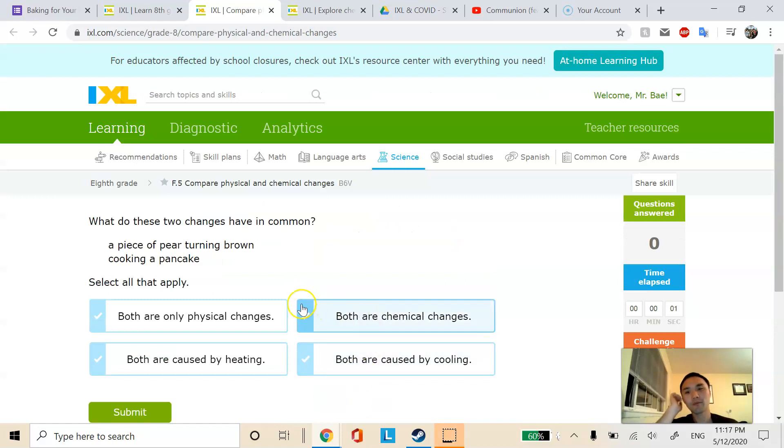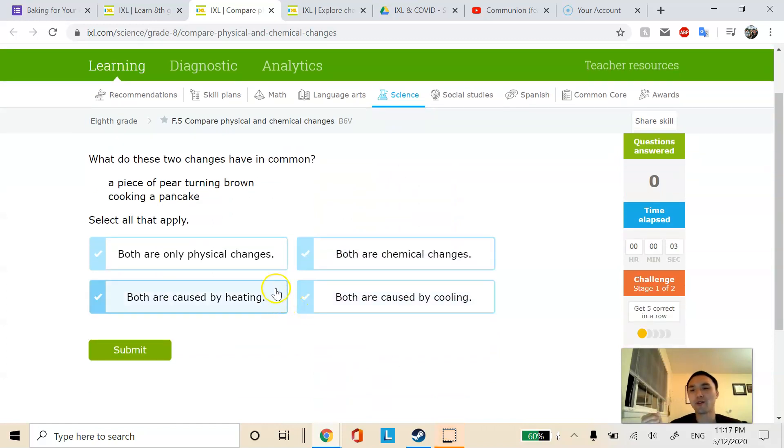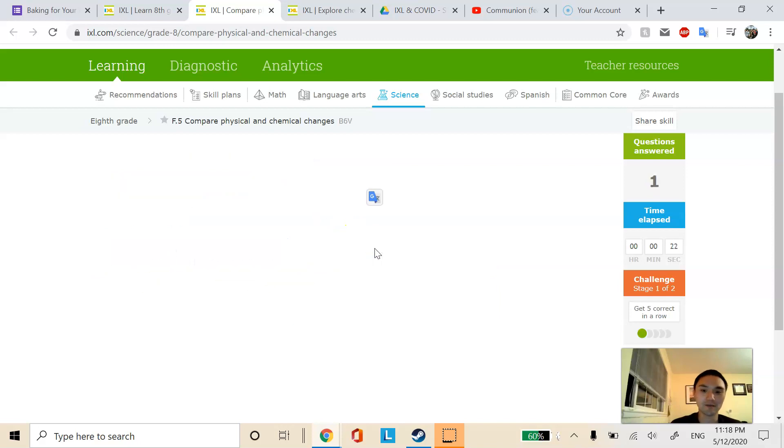Let's start with stage one. A piece of pear turning brown and cooking a pancake. A piece of pear turning brown is definitely a chemical change because you went from a pear and now it's getting brown. It's ugly. So chemical change. Cooking a pancake, you started off with flour and all that stuff and then you made it into a pancake. So that's obviously going to be a chemical change. So these are both chemical changes.